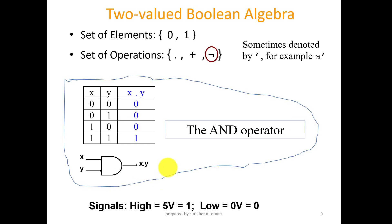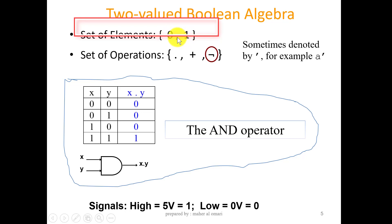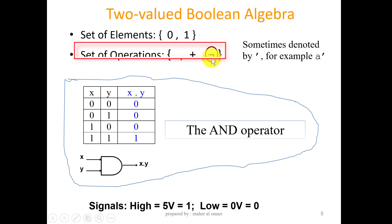The two-valued Boolean Algebra has a set of elements which are zeros and ones — it contains two elements in the set, zero and one. The set of operators are the AND, the OR, and the NOT, sometimes denoted as shown here.